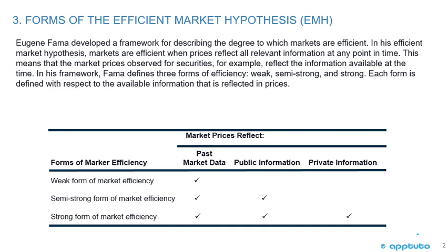Eugene Fama developed a framework for describing the degree to which markets are efficient. In his Efficient Market Hypothesis, markets are efficient when prices reflect all relevant information at any point in time. This means that the market prices observed for securities reflect the information available at the time.